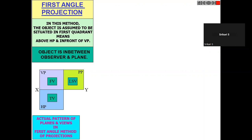Let us start the isometric view and orthographic projections. In first angle projection we have a front view, below we have a top view, and we have a left side view. Let us see one example.